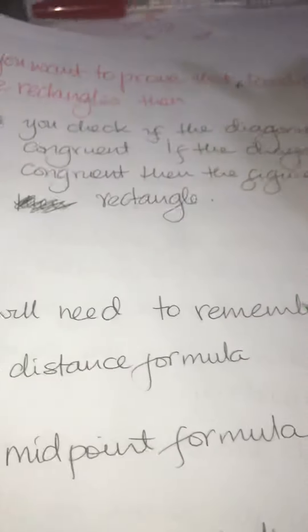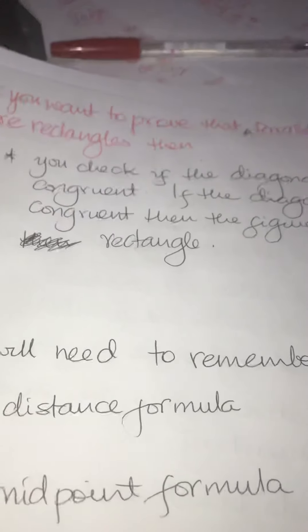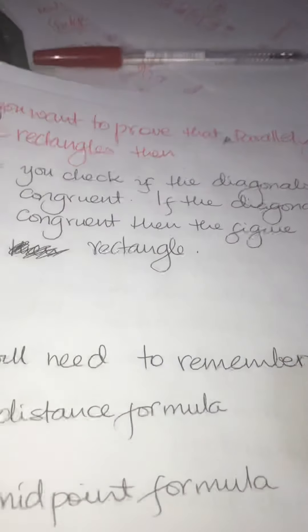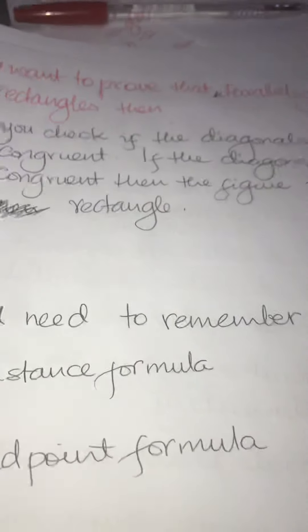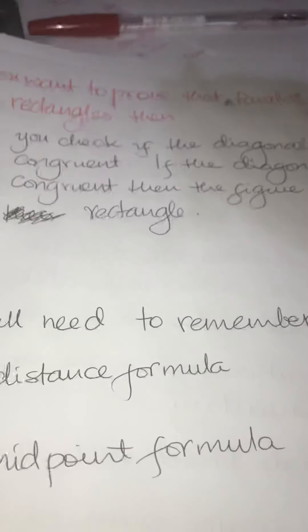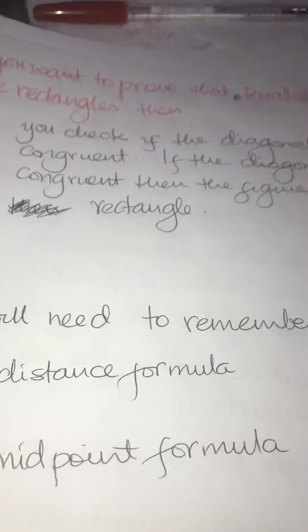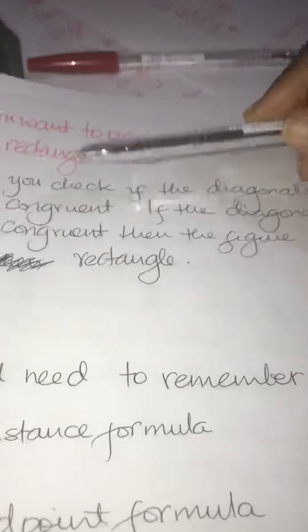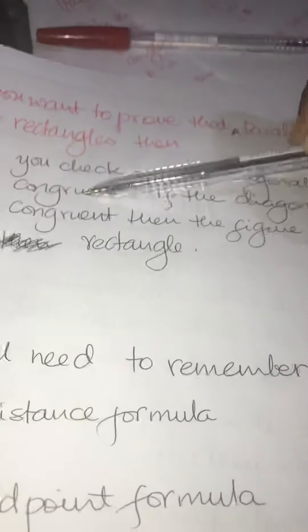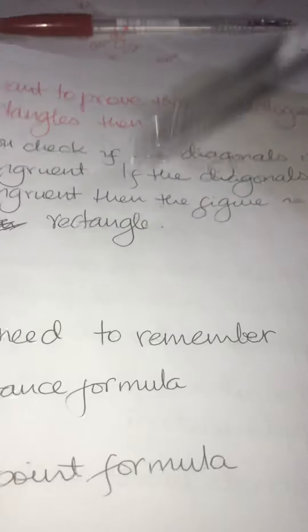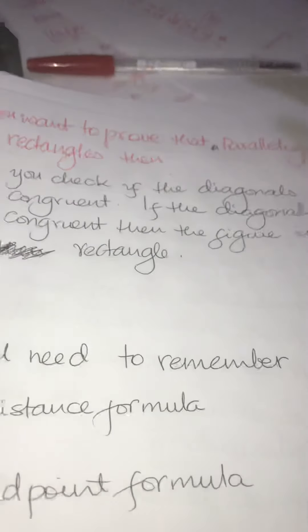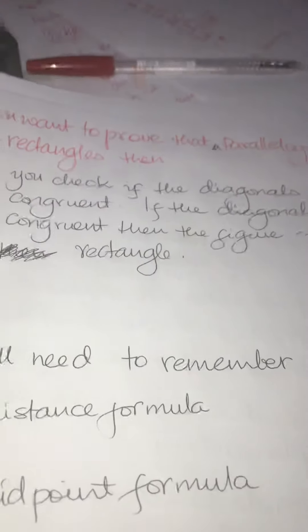If you want to prove that a parallelogram is a rectangle, you check if the diagonals are congruent. If the diagonals are congruent, then it is a rectangle. If the diagonals are not congruent, then it is just a parallelogram, not a rectangle. If the diagonals are congruent, then the figure is both a parallelogram and a rectangle. Only if your diagonals are the same will you say the shape is a rectangle.